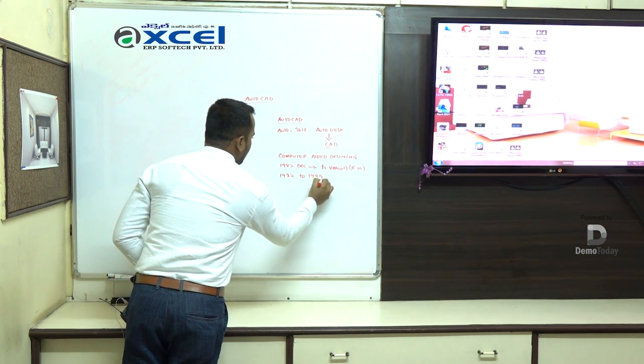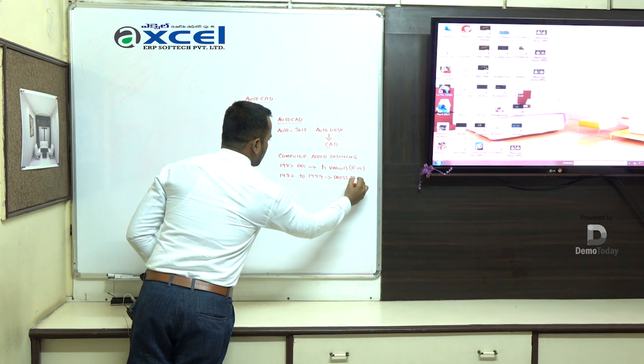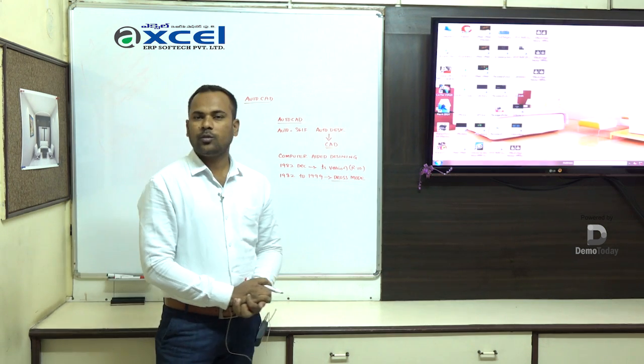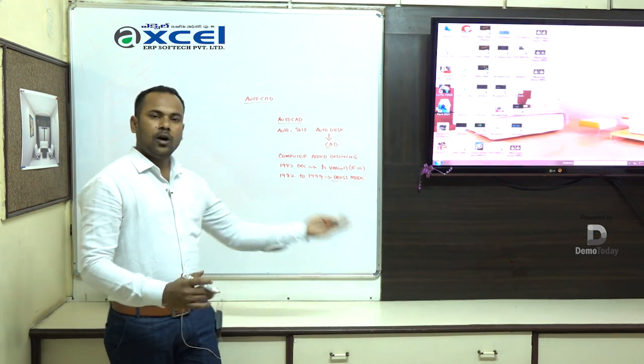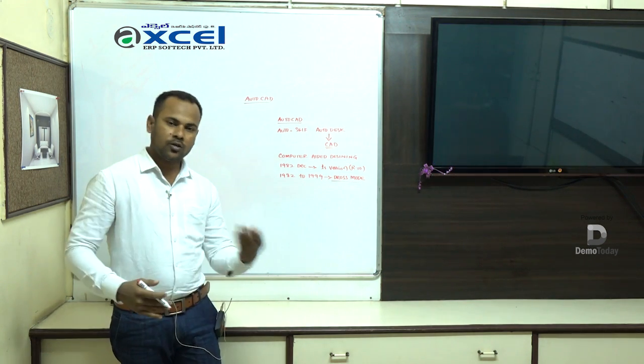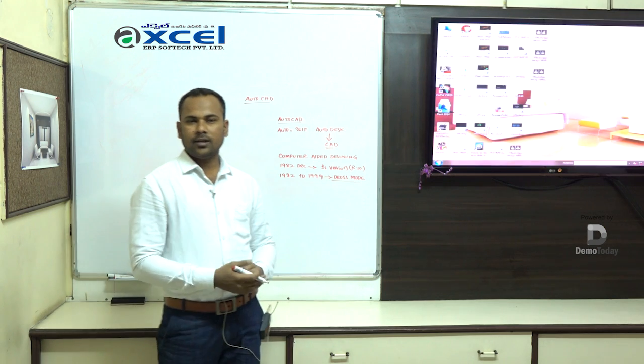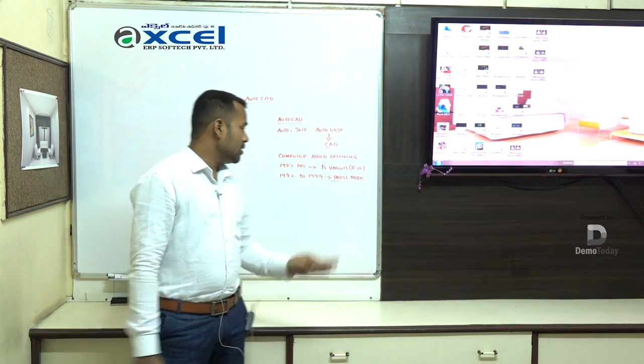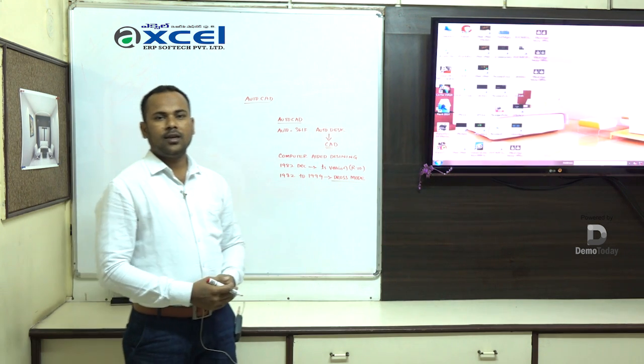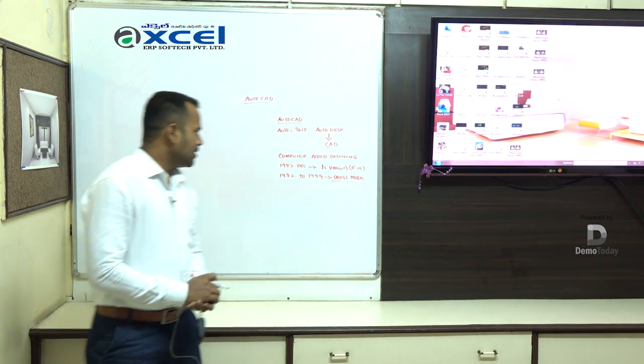From 1982 to 1999, this software was in DOS mode system. What is DOS mode? In DOS mode, if you want to draw the line, L-I-N-E enter. If you want to draw the circle, C enter. If you want to draw the rectangle, R-E-C enter. You have to type the full command name.